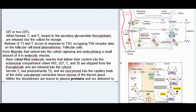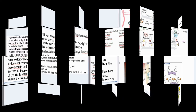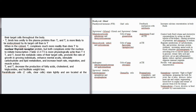Within the bloodstream, thyroid hormones are bound to plasma proteins and delivered to target cells throughout the body. T3 binds less avidly to plasma proteins than T4 and is more likely to be endocytosed by its target cell. In the cytosol, T3 complexes much more readily than T4 to nuclear thyroid receptor protein, but both complexes enter the nucleus to initiate transcription (Table 13.4). T3 is more physiologically active than T4. T3 and T4 boost the metabolic rates of their target cells, promote the rate of growth in growing individuals, enhance mental acuity, stimulate carbohydrate and lipid metabolism, increase heart rate, respiration, and muscle action, and decrease the production of fatty acids, cholesterol, and triglycerides — facilitating weight loss.